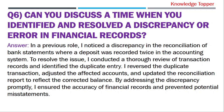Question number six: can you discuss a time when you identified and resolved a discrepancy or error in financial records? The purpose of this question is that your interviewer wants to evaluate your problem-solving abilities and your attention to detail in identifying and rectifying financial discrepancies. A sample answer: in a previous role, I noticed a discrepancy in the reconciliation of bank statements where a deposit was recorded twice in the accounting system. To resolve the issue, I conducted a thorough review of transaction records and identified the duplicate entry. I reversed the duplicate transaction, adjusted the affected accounts and updated the reconciliation report to reflect the corrected balance. By addressing the discrepancy promptly, I ensured the accuracy of financial records and prevented potential misstatements.